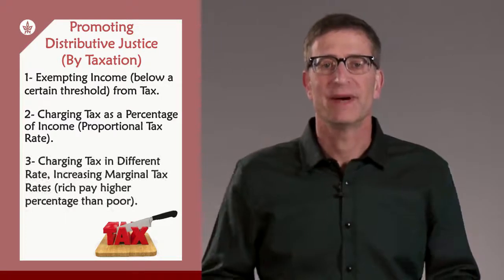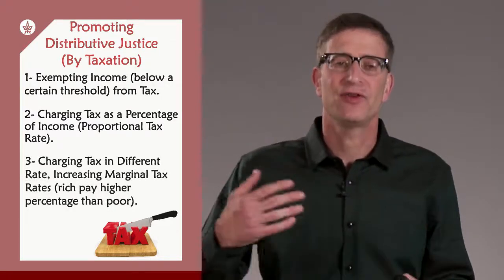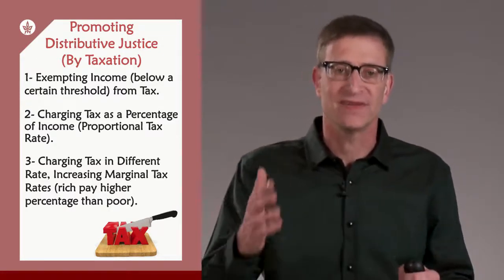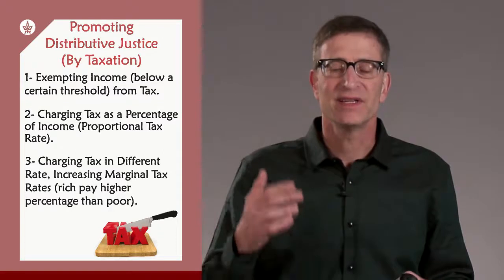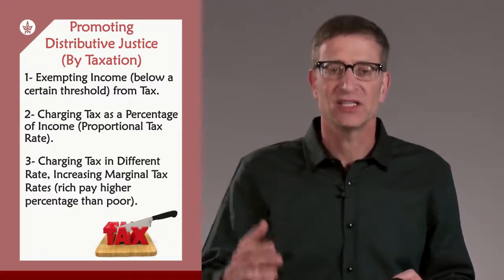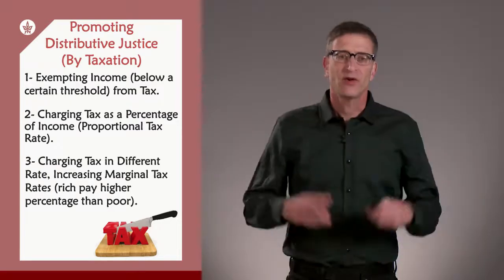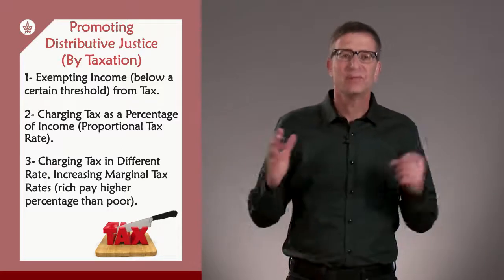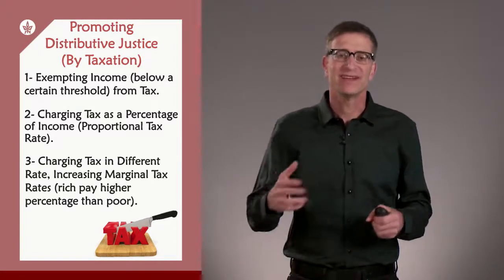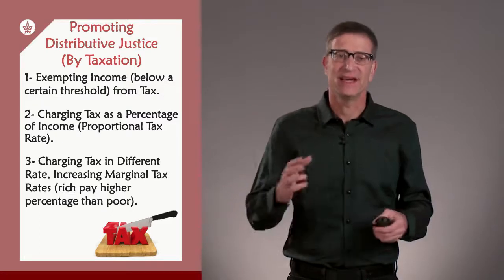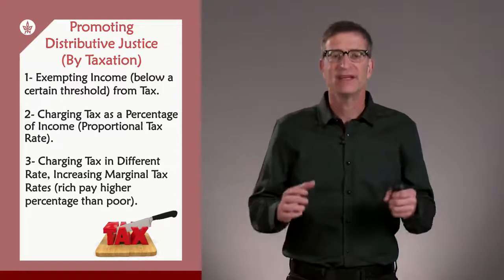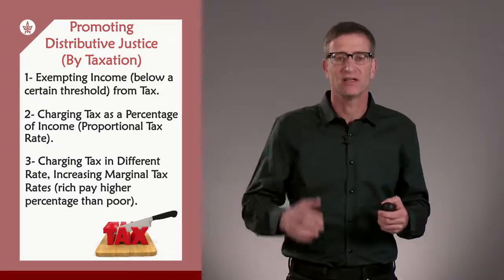It could also do it by charging taxes at different rates, meaning not only that the rich and the poor pay tax in percentage, but they also pay different tax rates. The rich pays a higher percentage of his income in taxes. For example, the poor pays 10% of his income in tax, that is $1,000, whereas the rich pays 30%, that is $30,000. This is usually done by having increasing marginal tax rates.